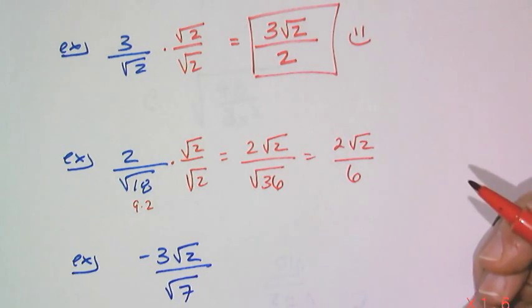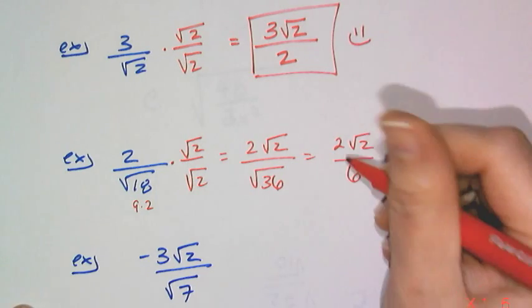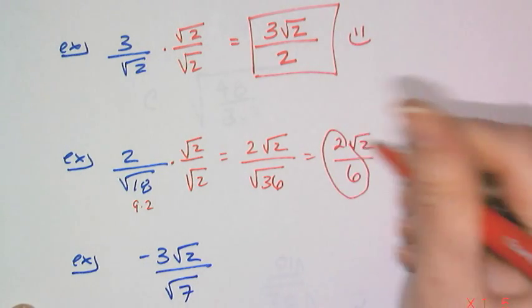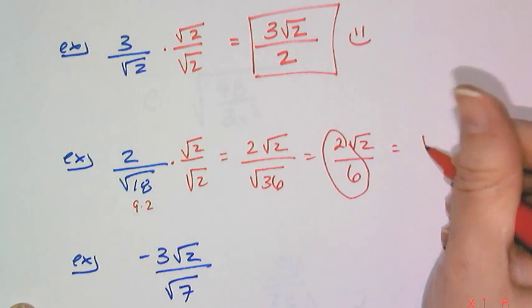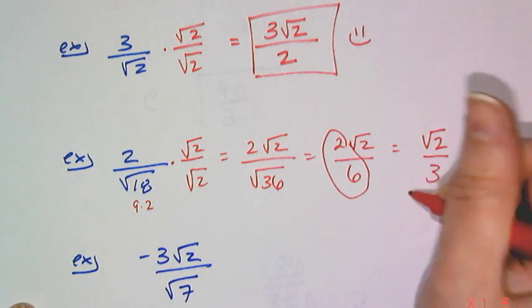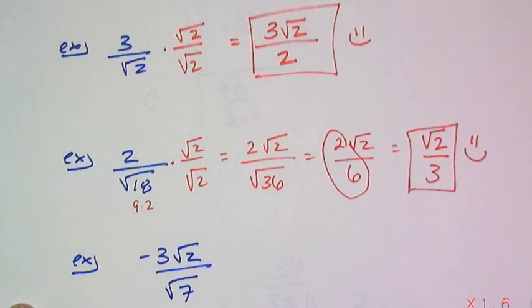Which gets rid of the radical, but it's not simplified yet, because 2 over 6 is really 1 third. And so I end up with root 2 over 3. So this one's simplified.